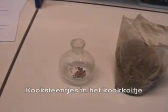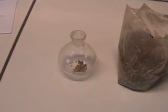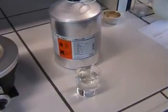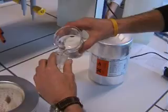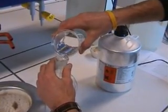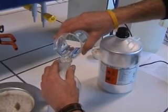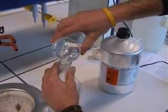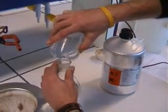In het kookkolfje brengen we enkele kooksteentjes. Bij een extractie moet men steeds gebruik maken van een oplosmiddel. In dit geval is dat ether. Zorg er steeds voor dat de hoeveelheid oplosmiddel meer is dan de inhoud van het soxletapparaat. We brengen de ether in het kookkolfje en plaatsen deze in de verwarmingsmantel.